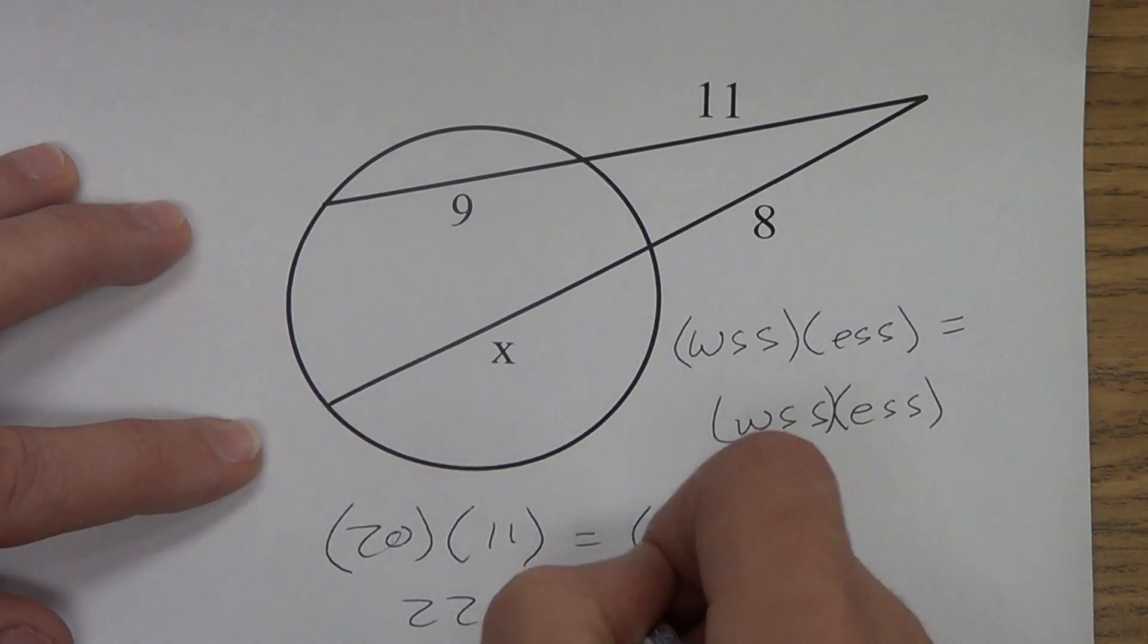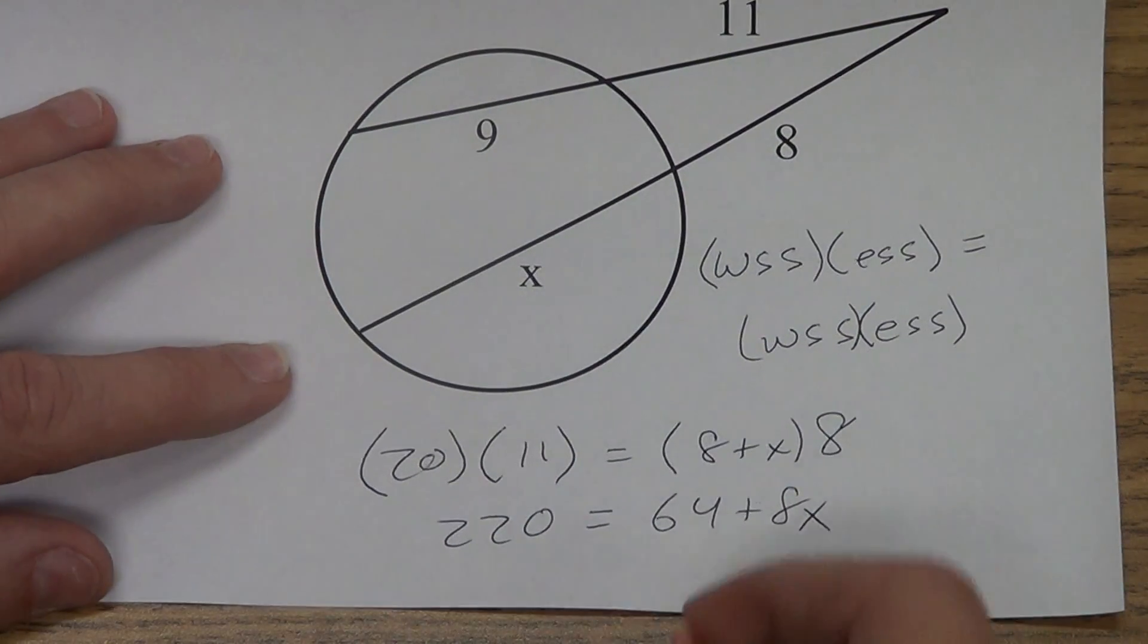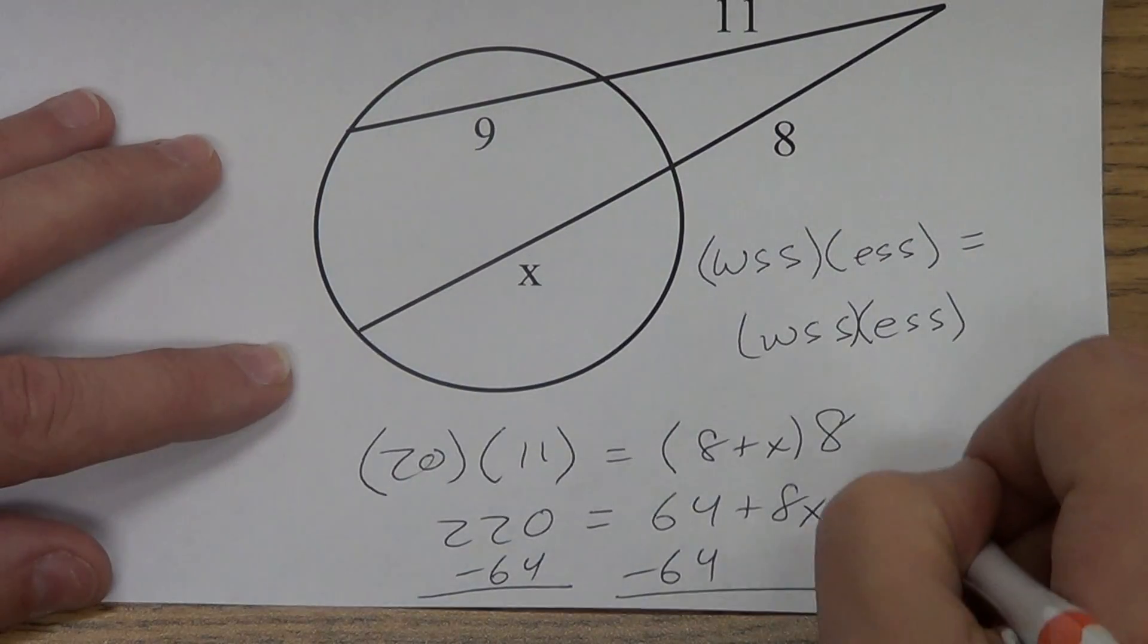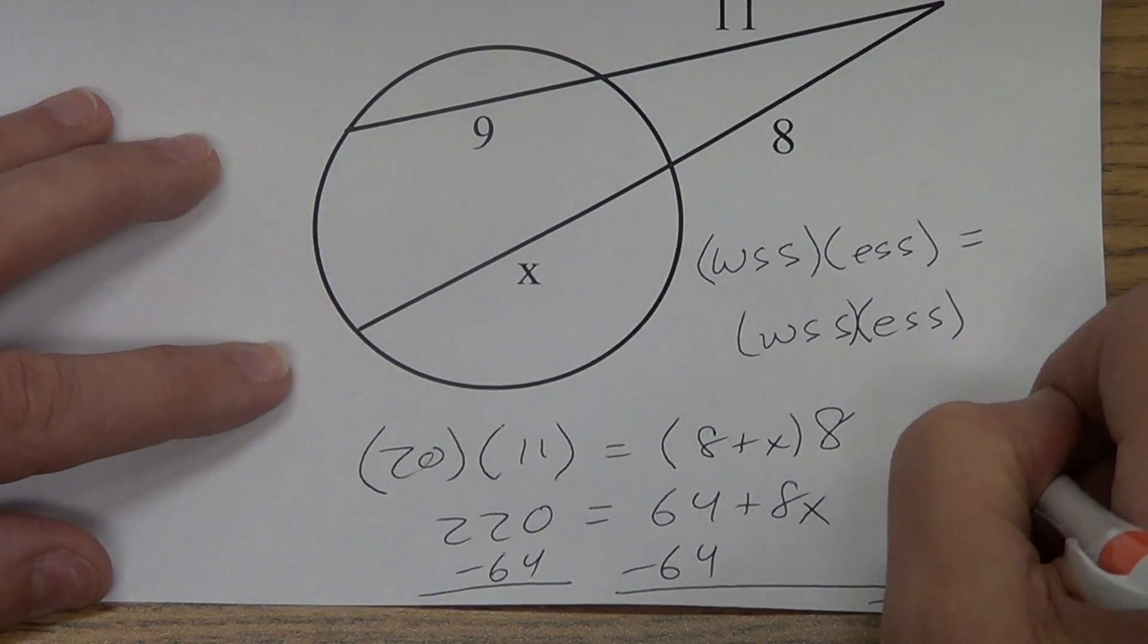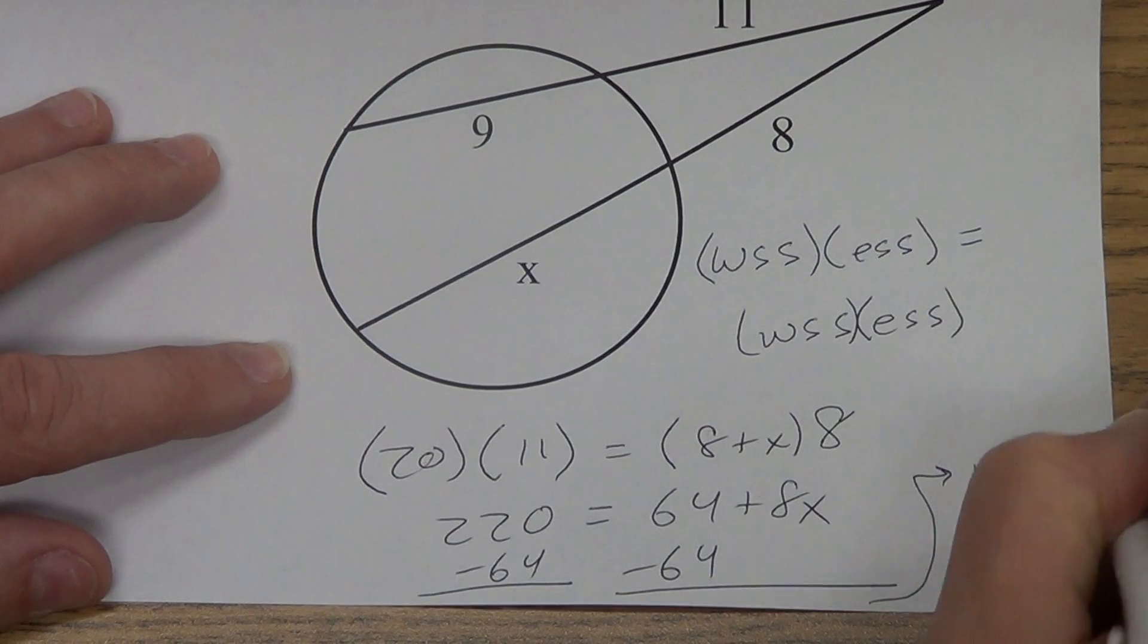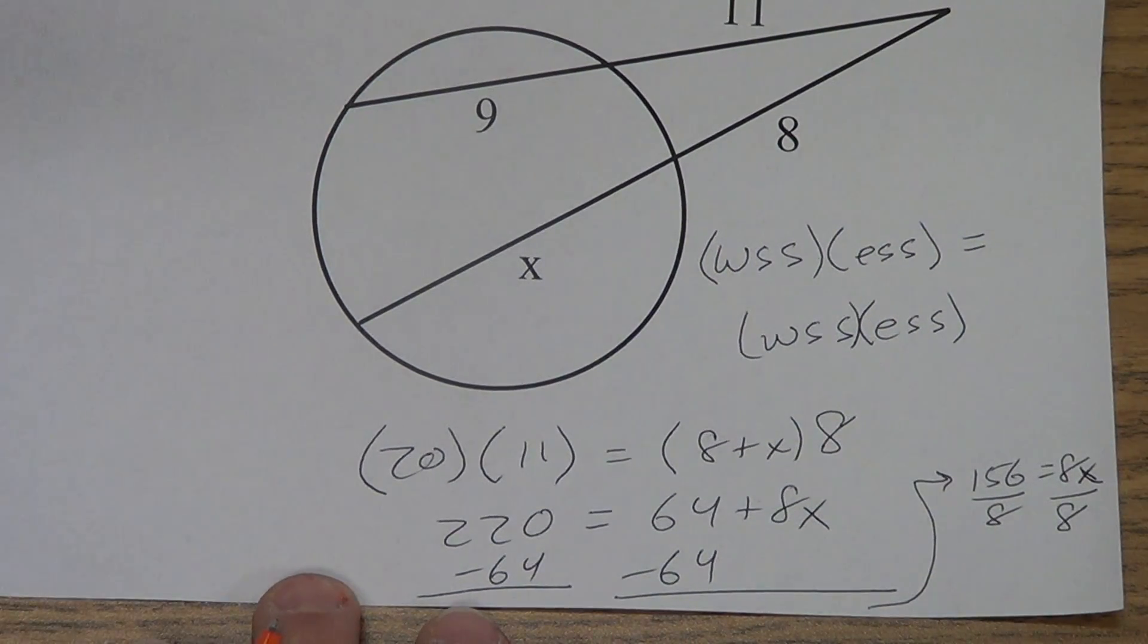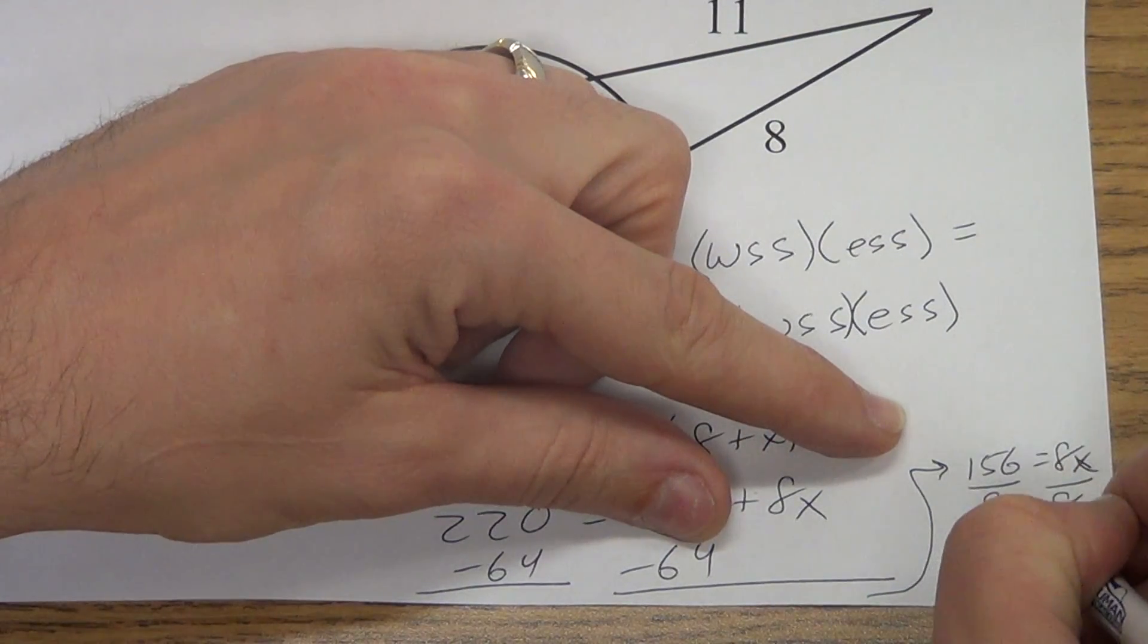220 equals 64 plus 8x. I'm going to subtract that 64. I'm going to add a room down here, so I'm going to bring this right up over here. So I get 220 minus 64. I believe that's 156 equals 8x. We're going to divide by 8. This does not reduce all the way down. You could go to like 19.5 if you want. I'm going to leave it as a fraction, 39 over 2 units.